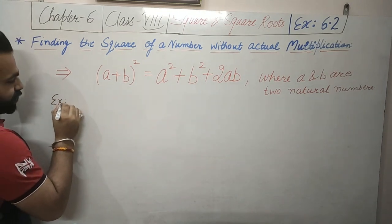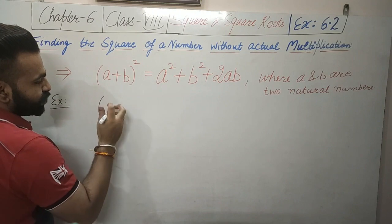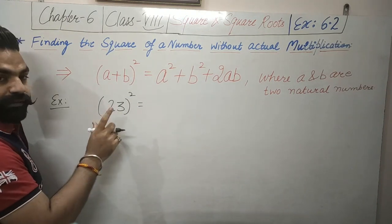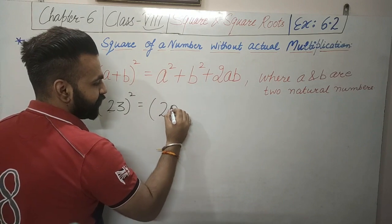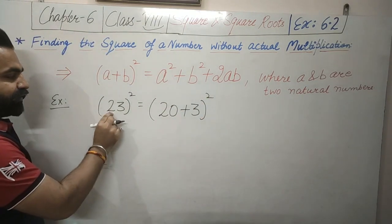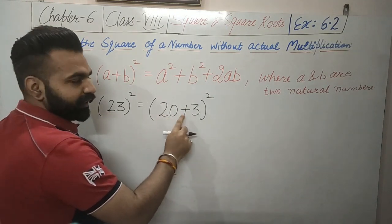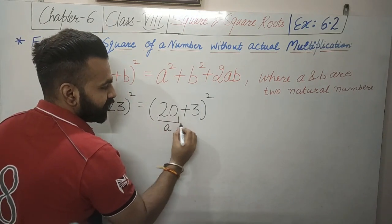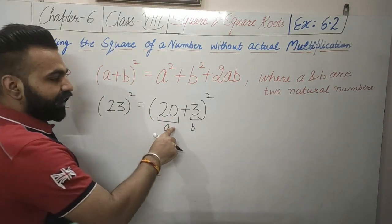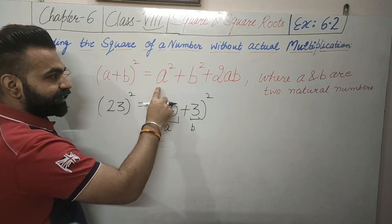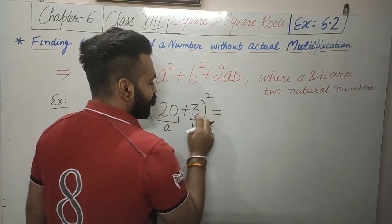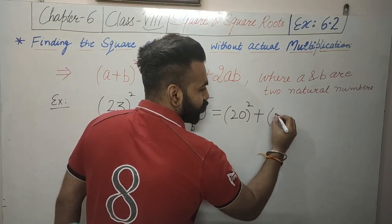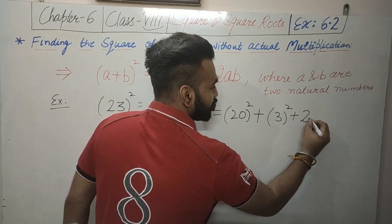The first example is 23 squared. If we want to calculate the square of 23 without actual multiplication, we can write 23 as 20 plus 3. So we have split 23 into 20 plus 3. Now it is in the form of (a + b) whole square, where a is 20 and b is 3. We will put the values of a and b into the equation: a squared plus b squared plus 2ab.